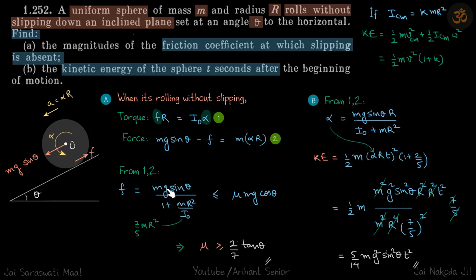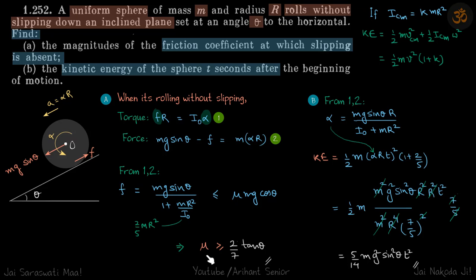F comes out from those equations. This friction must be less than the limiting friction. Limiting friction is mu times the normal reaction. For a body on an inclined plane at angle theta, the normal reaction is mg·cos(theta). From here we get the value of mu, which should be greater than (2/7)·tan(theta).